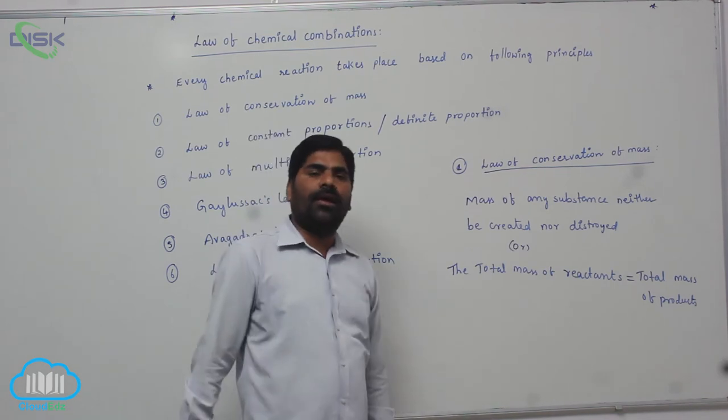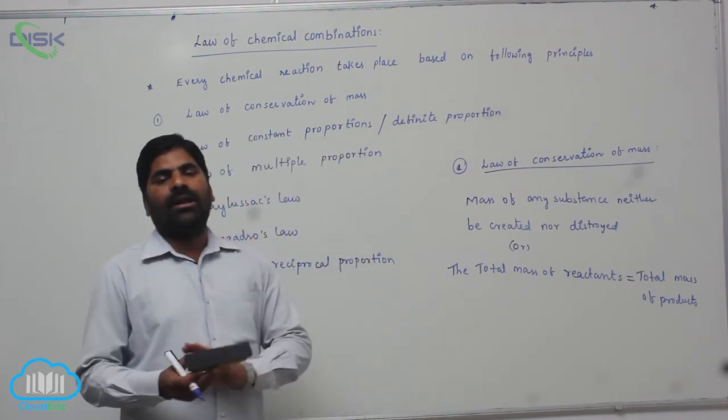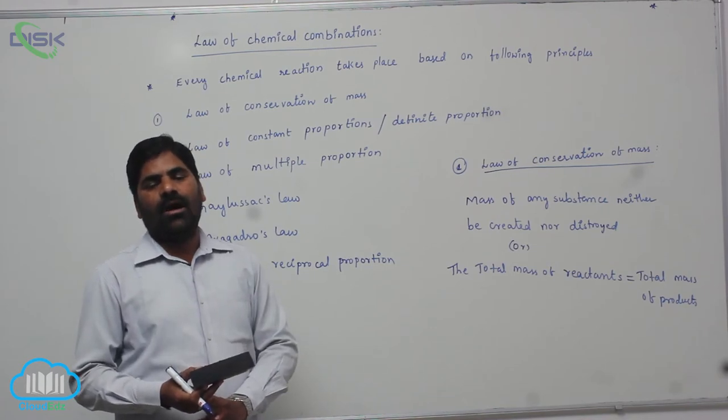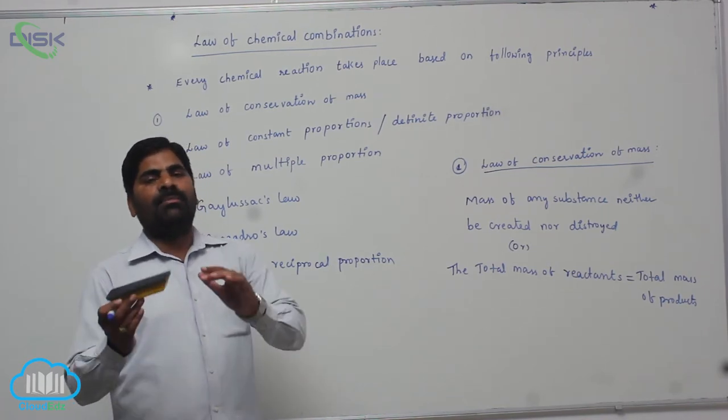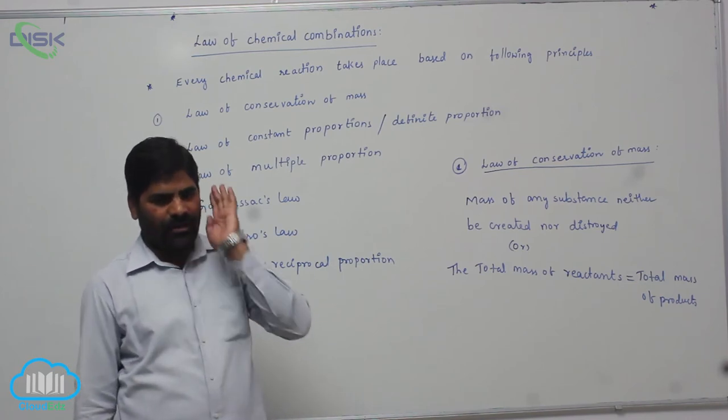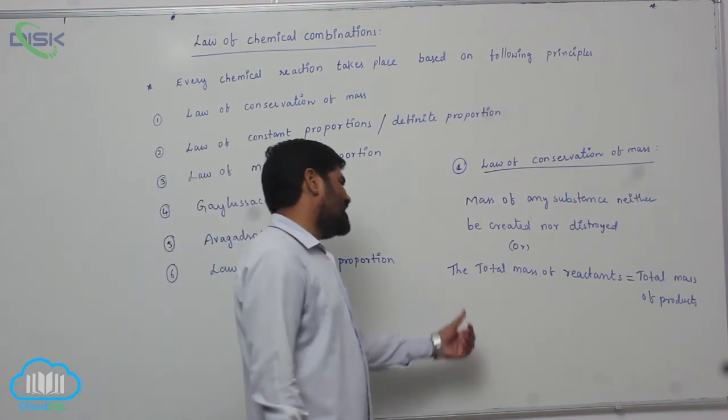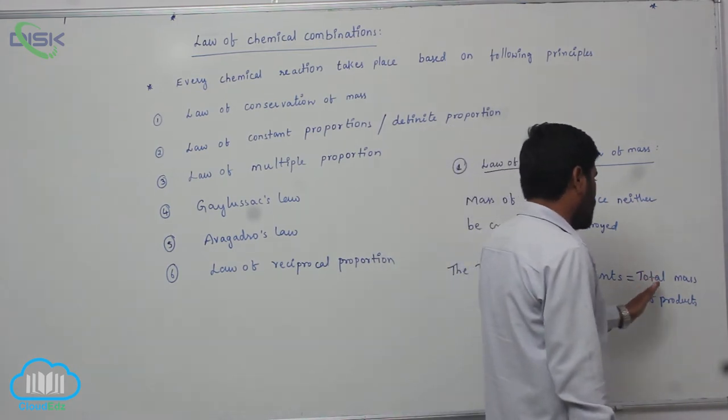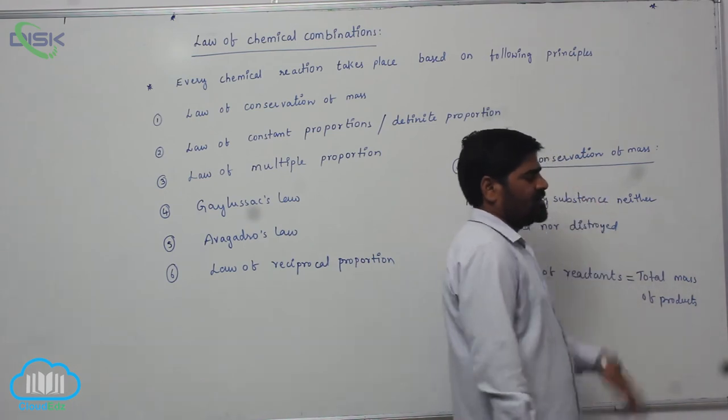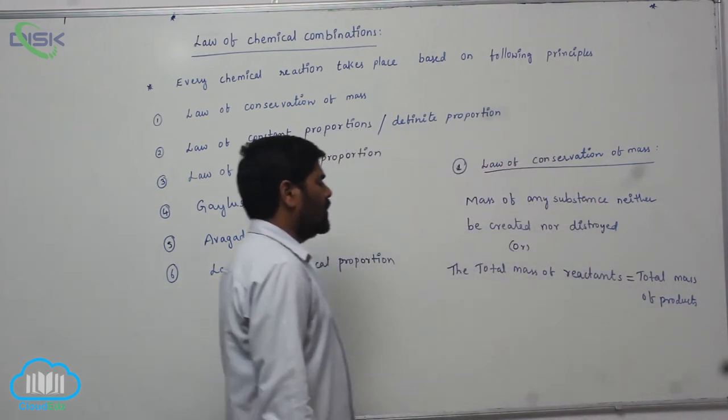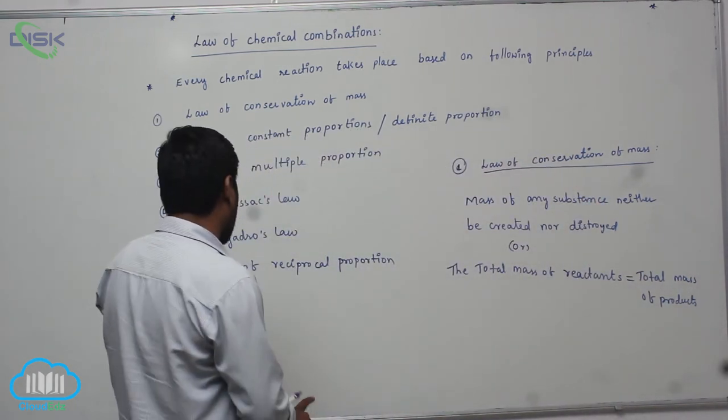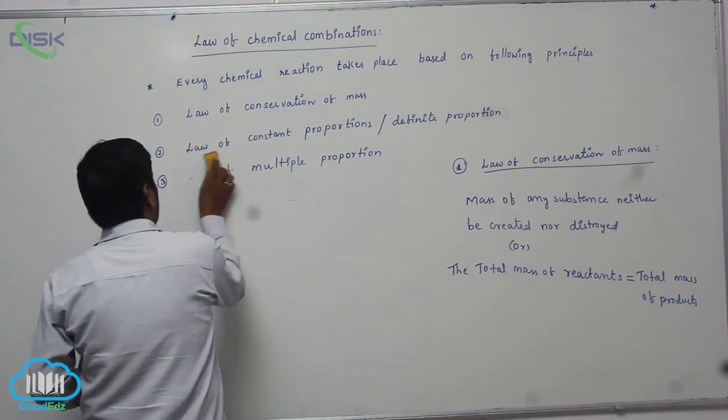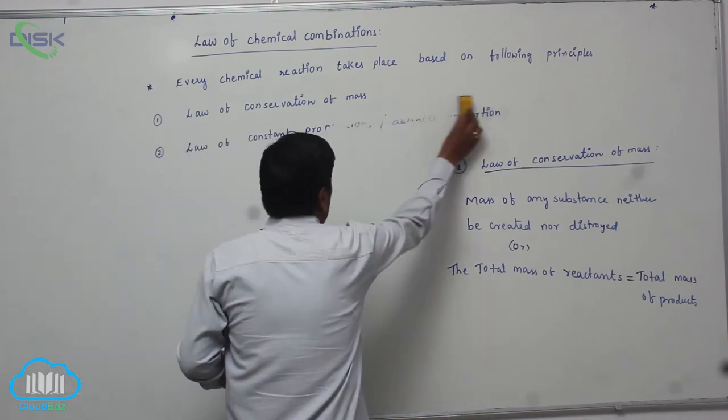In a particular chemical reaction, what amount of mass is lost from reactants, the same amount of mass is appeared in products. So that is the reason why the total mass of reactants equals to total mass of products. This particular rule is not applicable for nuclear reactions.